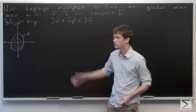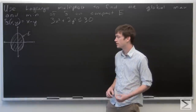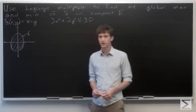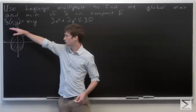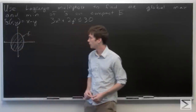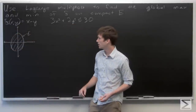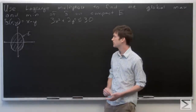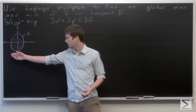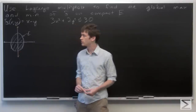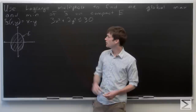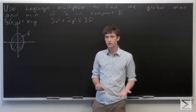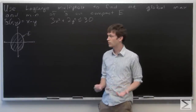In this problem we're asked to use Lagrange multipliers to find the global max and min of our function f on a compact region defined by our constraint. We have f(x,y) = x - y, and our constraint equation is 3x² + 2y² ≤ 30. We're given a quick sketch of our compact region E defined by our constraint — it's just an ellipse — and we want to use Lagrange multipliers to find the global max and min of f on this region.